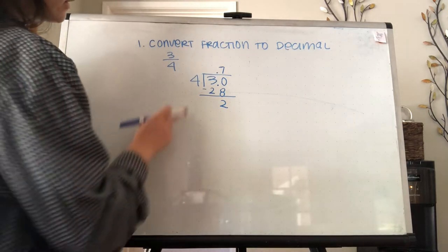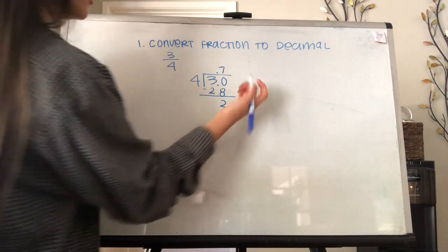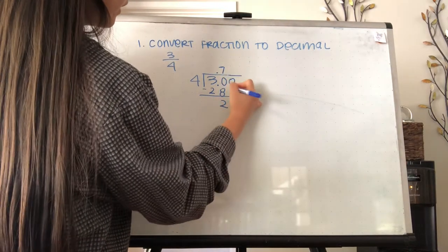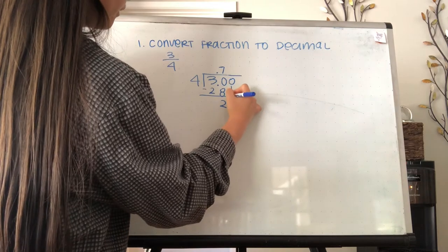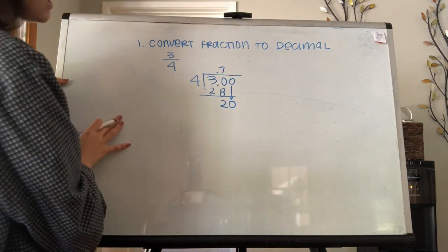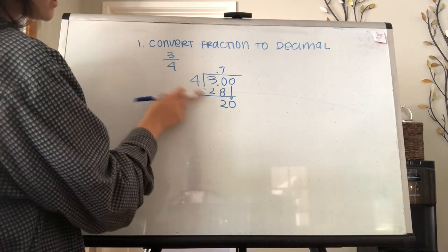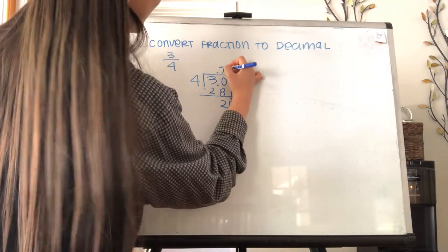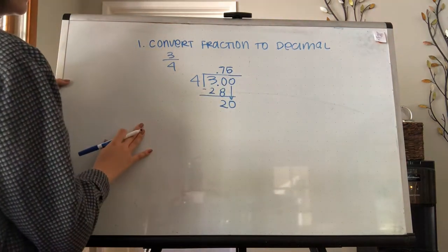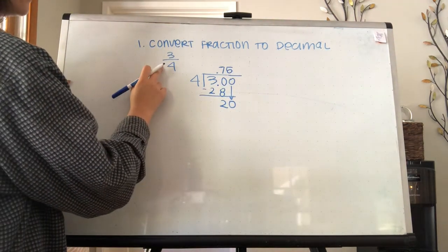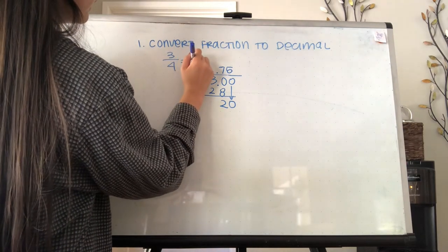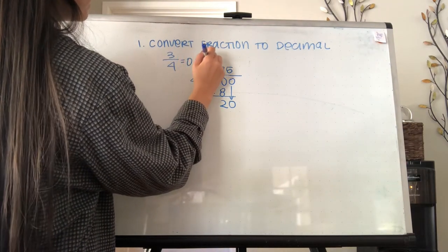Now 4 can't go into 2, so you have to add another 0 and bring it down, making it 20. And now 4 can go into 20 five times. So 3 over 4 as a decimal is 0.75.